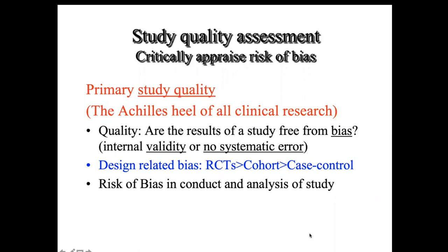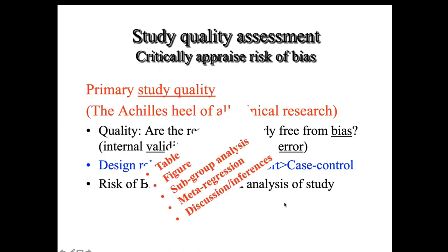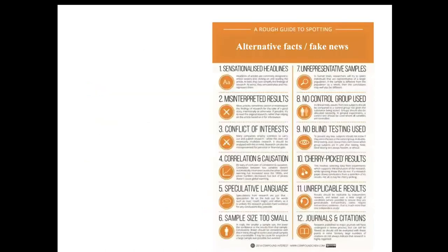Design-related bias is assessed by a hierarchy of evidence, and bias in conduct and analysis is assessed by applying a detailed assessment using an existing checklist or adapting one for our own review. This type of evaluation ought to be presented in the form of a table, possibly with a figure, and subsequently in meta-analysis used in subgroup analysis and meta-regression, and finally in making inferences when writing the discussion. The key things we see in this figure are the various lists of flaws that can exist in published literature.